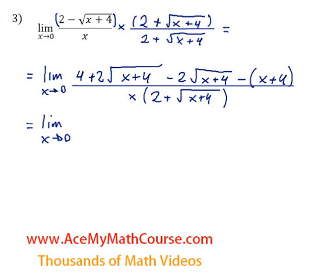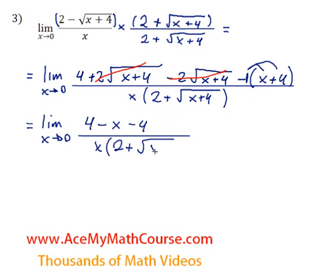But up top, look at this. We can cancel these out. Because 2 root x plus 4 minus 2 root x plus 4 is just 0. So we just end up with 4 minus. Now, there's a hidden one here, which we can distribute. Minus 1 times x minus x. Minus 1 times 4 minus 4. And that's still over x times 2 plus root x plus 4.